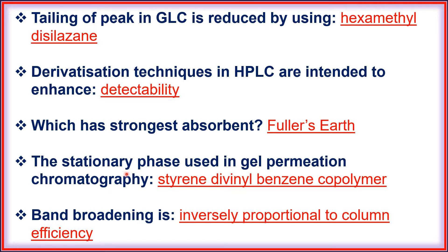The stationary phase used in gel permeation chromatography is styrene divinyl benzene copolymer. Band broadening is inversely proportional to column efficiency.